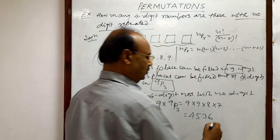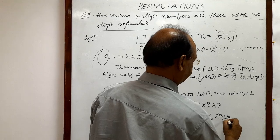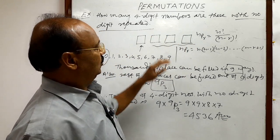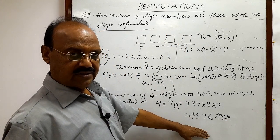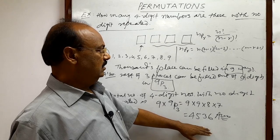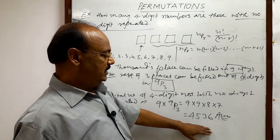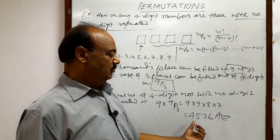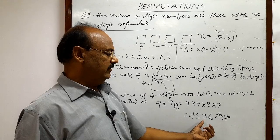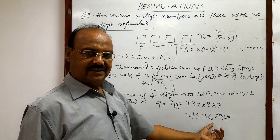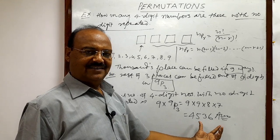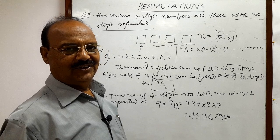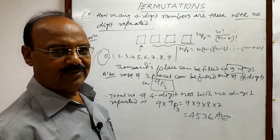After multiplying these numbers we get the answer: 4536. So this is the required answer — the total number of four-digit numbers when no digit is repeated is 4536. Hope you have understood well. Thank you very much for watching this video.